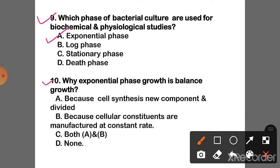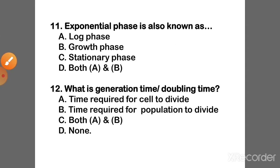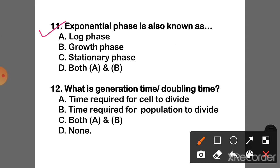Question 10: Why is exponential phase growth considered balanced growth? The correct answer is Option B — Because cellular constituent manufacture occurs at a constant rate.